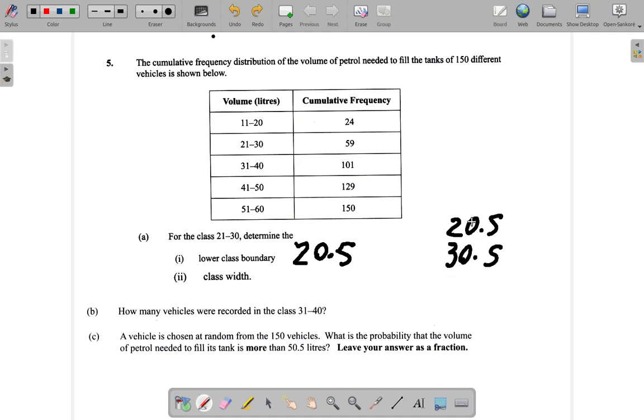Then if you subtract them, let me put the 30.5 at the top since it's a larger number. 30.5 minus 20.5 would be 10.0. So it would be 10 flat, or 10.0 would be the class width.